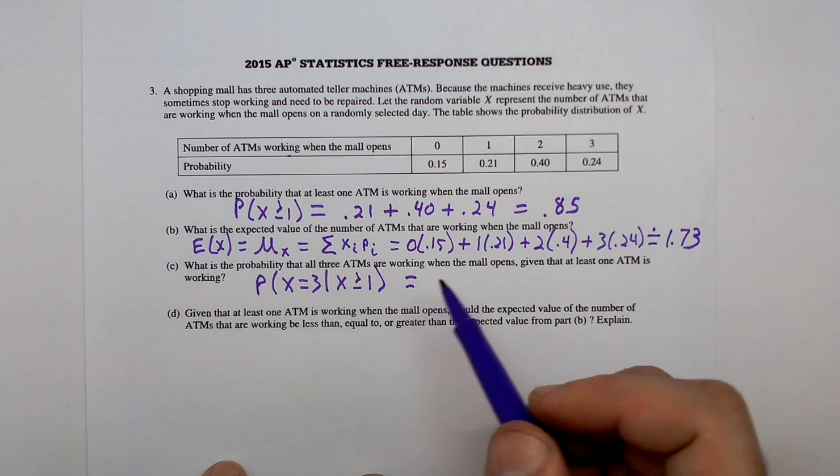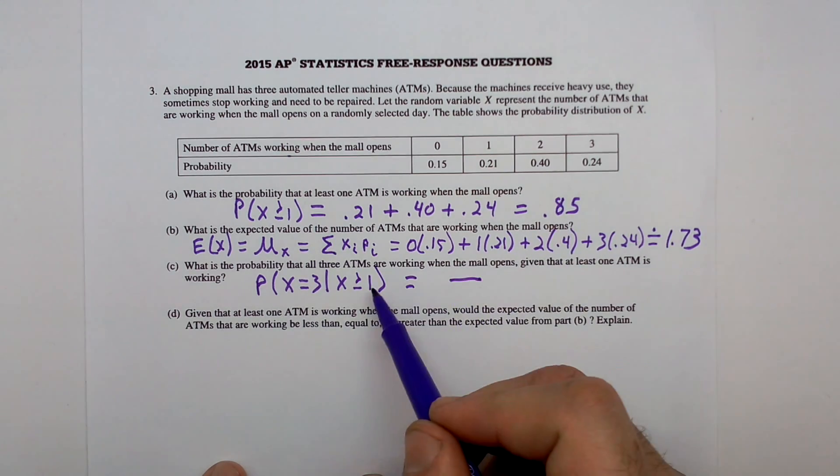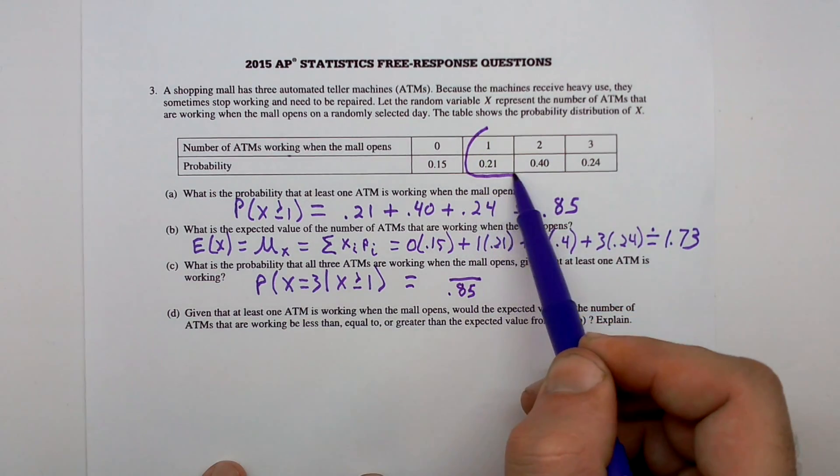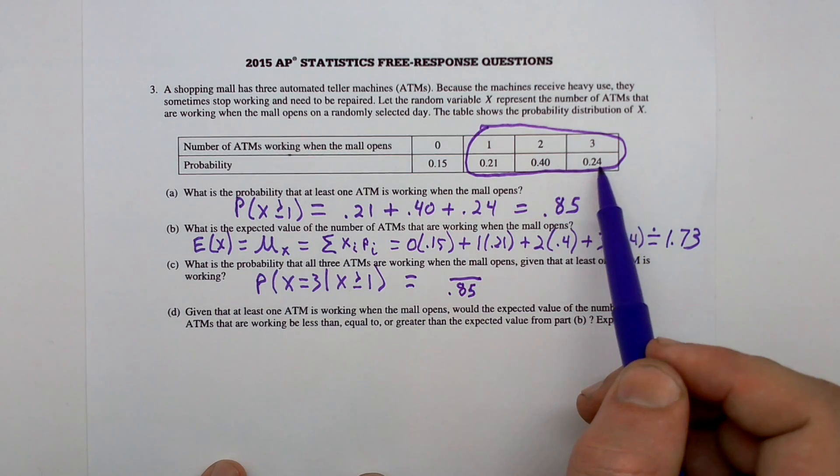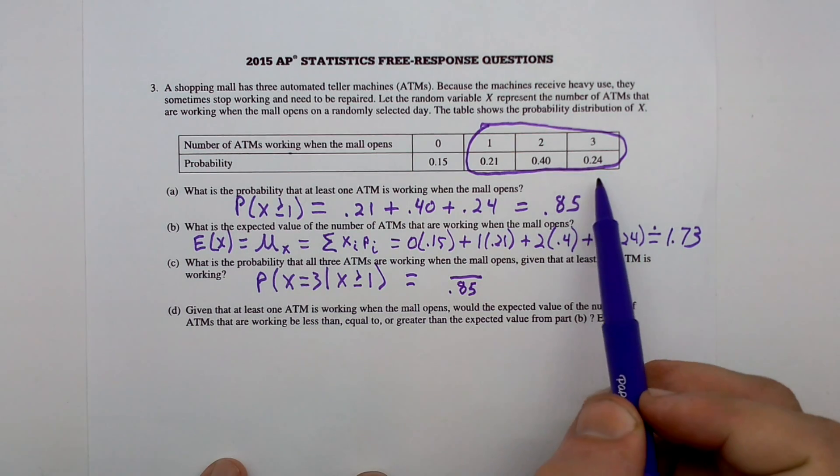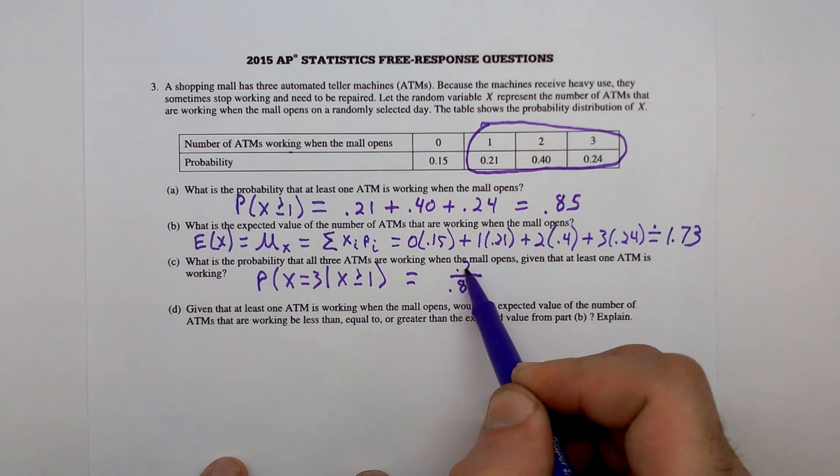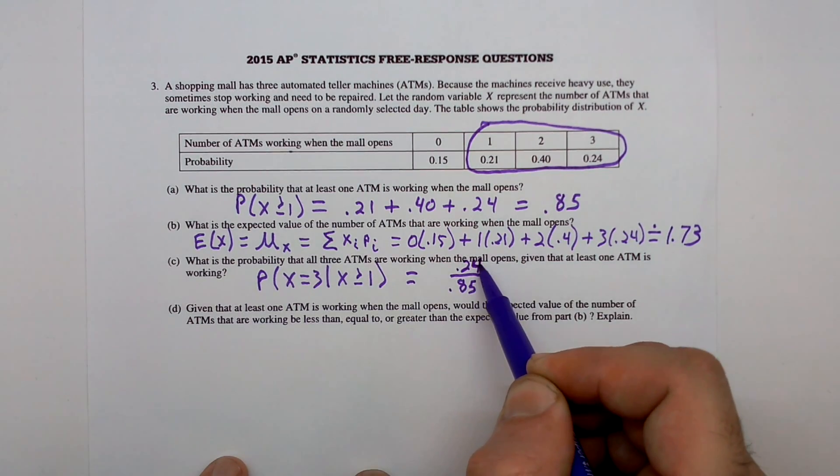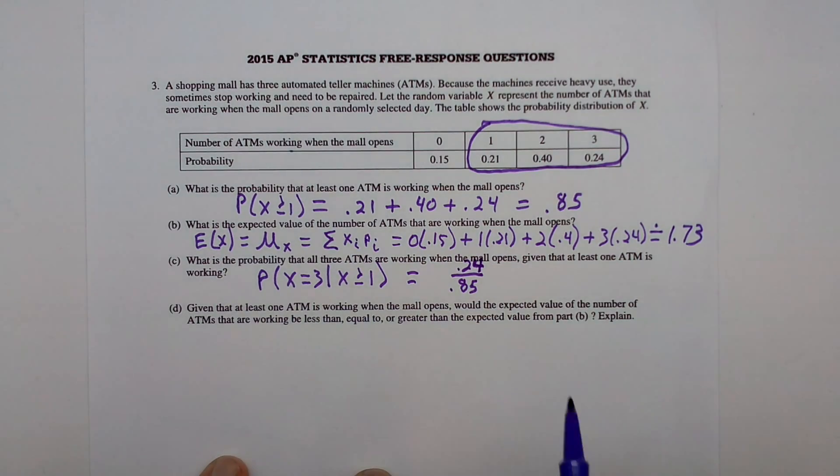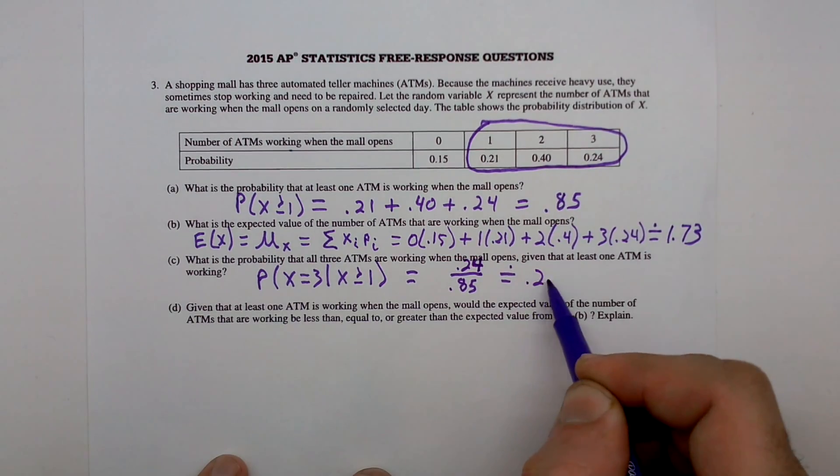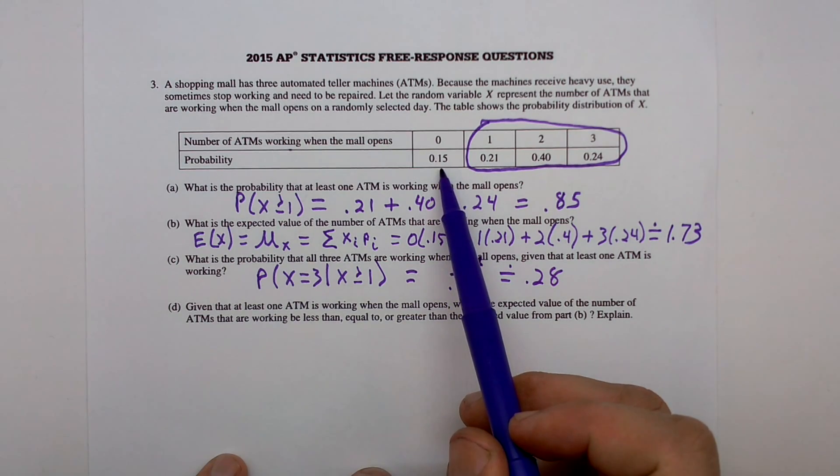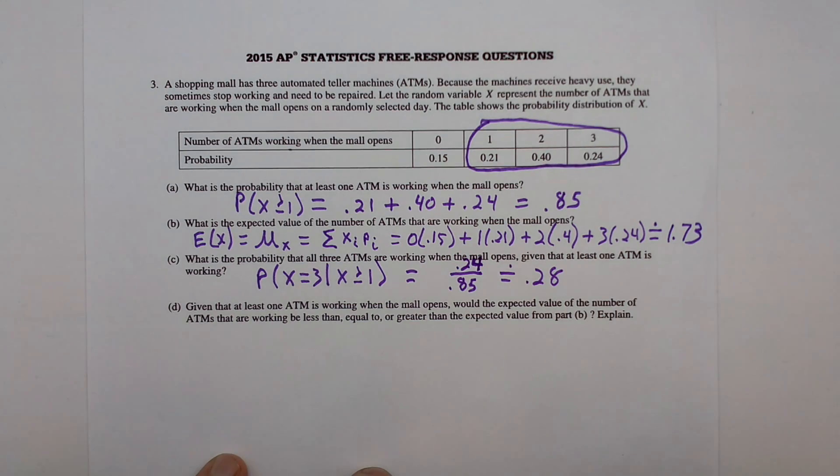So in this case, our denominator is this 0.85. The denominator here is going to be 0.85. Our whole world is this area here. Given that we are here, what's the chance of it being precisely this one? Well, the numerator in this case is 0.24. So 0.24 divided by 0.85, and that is approximately 0.28. So you can see that it increased slightly because we've totally neglected this 15% situation that 0 happened.